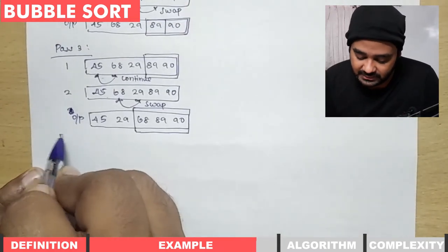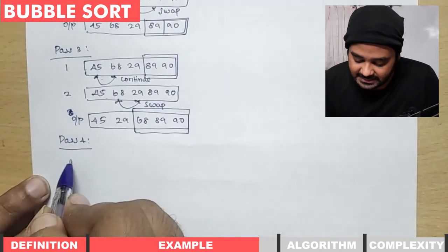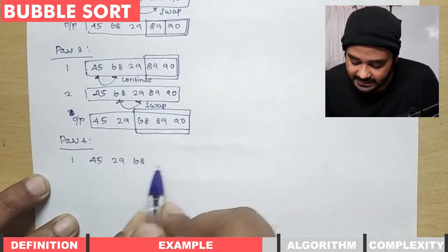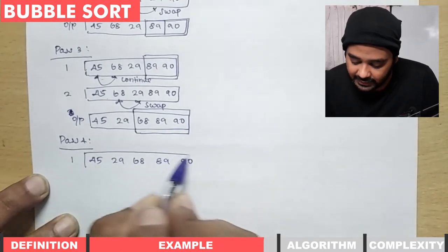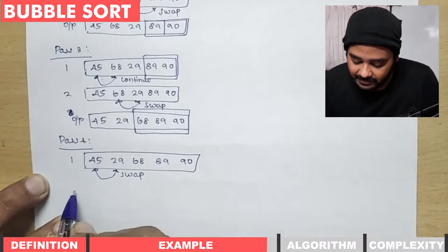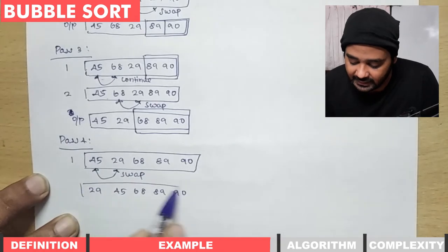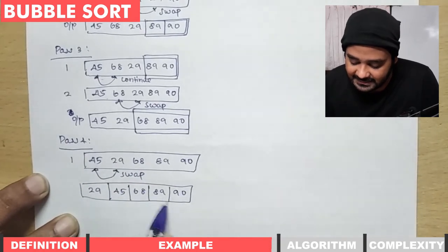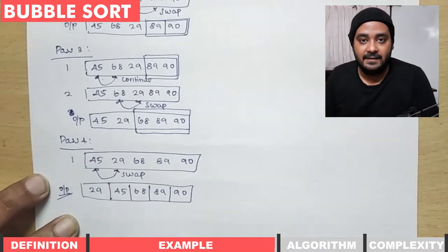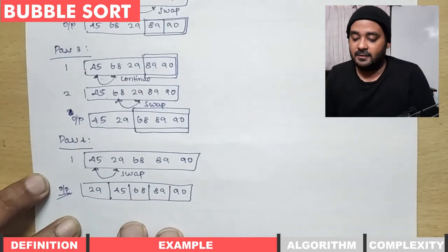Moving to pass four, the last pass. Taking the list: 45, 29, 68, 89, 90. We check the first two elements — not in order, so we swap. Result: 29, 45, 68, 89, 90. We have now completed all passes and steps, giving us the fully sorted list. This is how we perform the bubble sort operation.